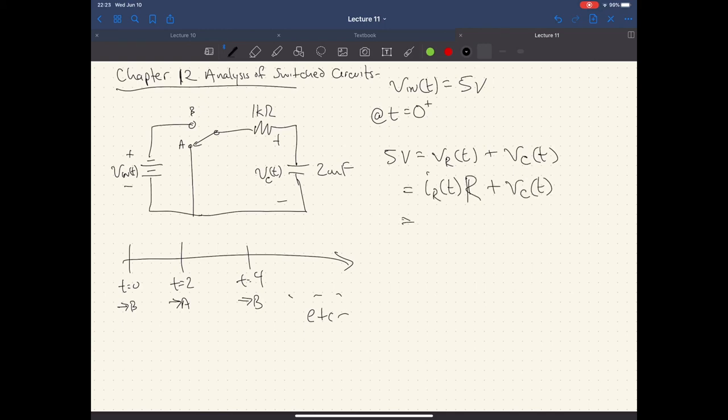So we keep going here. We substituted in IR times R and we know that IR is equivalent to IC. So we can do our substitution once more and we end up with IC here, but we know that IC of T is equal to C dV_C/dt.